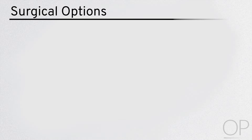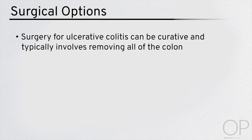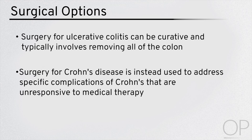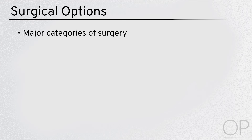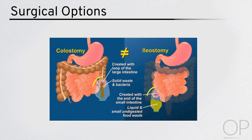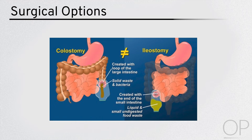Surgical options. Surgery for ulcerative colitis can be curative and typically involves removing all of the colon. Surgery for Crohn's disease is instead used to address specific complications of Crohn's that are unresponsive to medical therapy. Major categories of surgery include drainage of abscesses, resection of areas that are medically refractory such as strictures, fistulas, or perforated segments. A diverting ostomy, which diverts the fecal stream away from the inflamed colon, is another surgical strategy used to treat severe Crohn's disease.